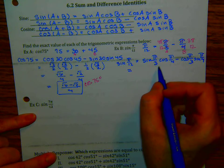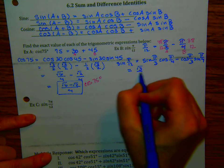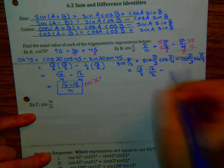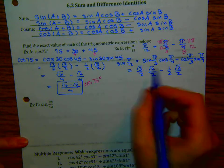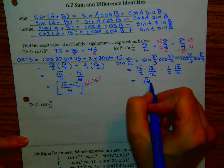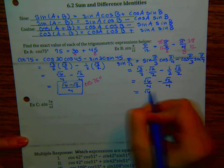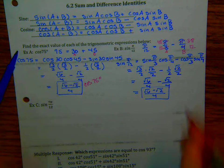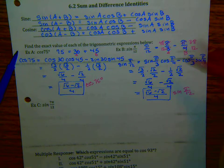Working this out: sine of π/3, which is 60°, is √3/2. Cosine of π/4 is √2/2, minus cosine of π/3 which is 1/2, times √2/2. So I get √6/4 minus √2/4, which becomes (√6 − √2) / 4. This is my final answer for the sine of π/12, using the difference identity.